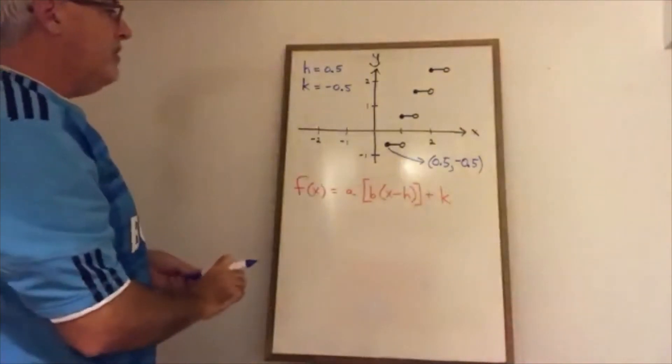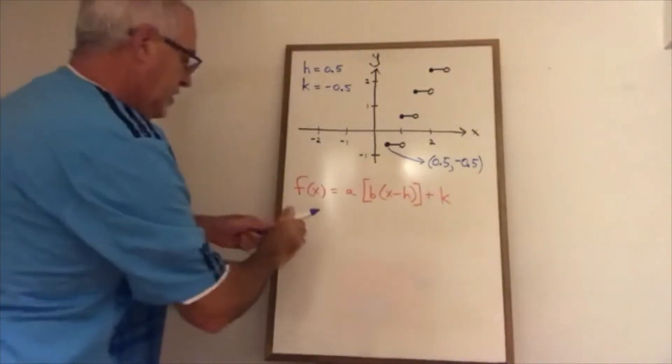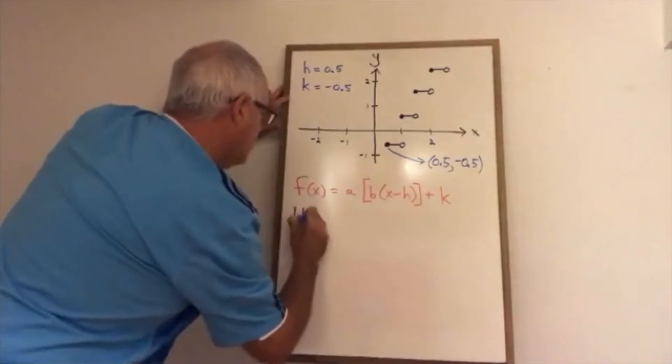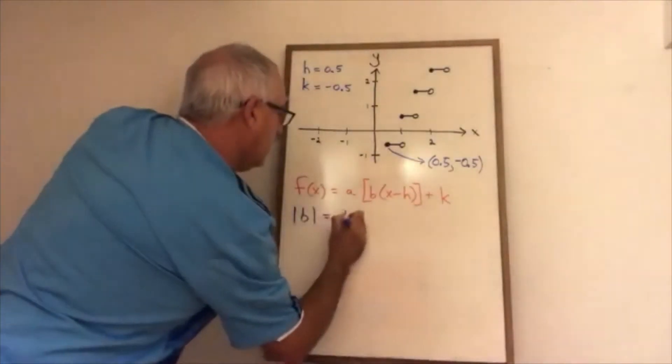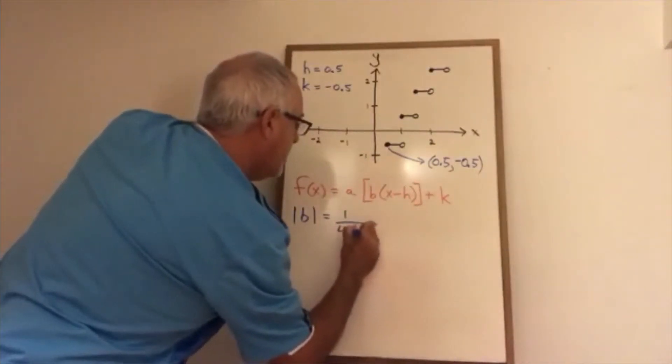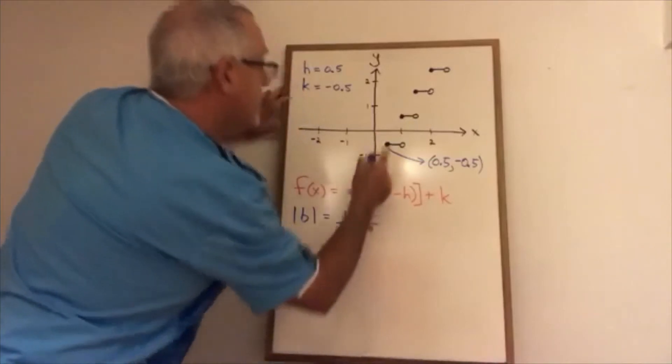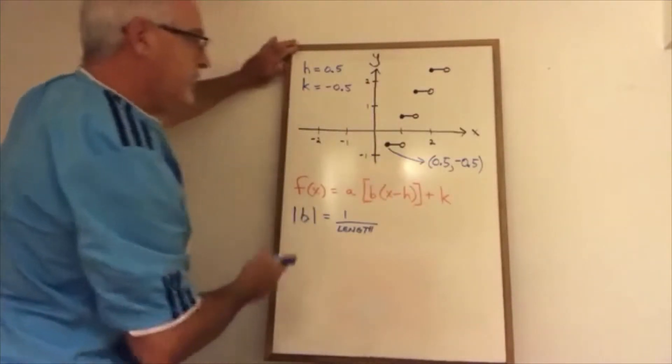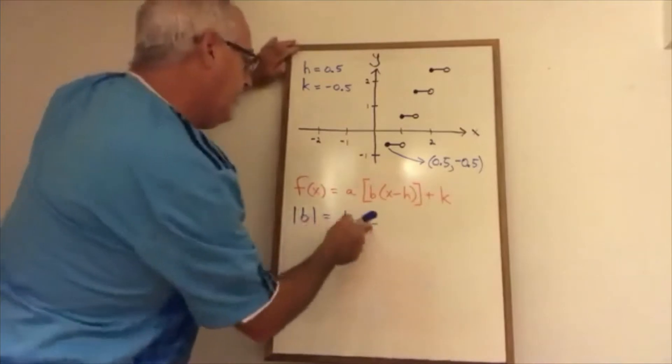Now I need to find my b. We know that the absolute value of b is equal to one over the length of the steps. These steps are half a unit in length, 0.5 in length.